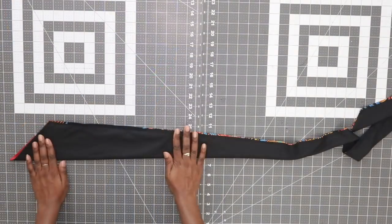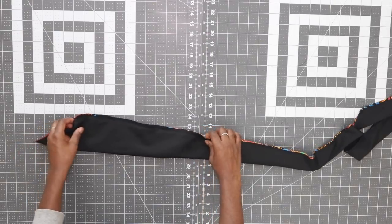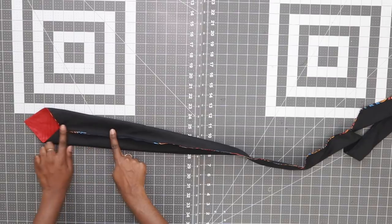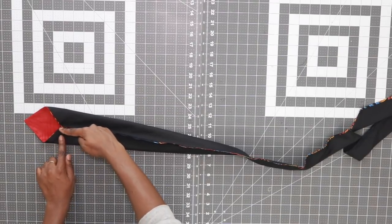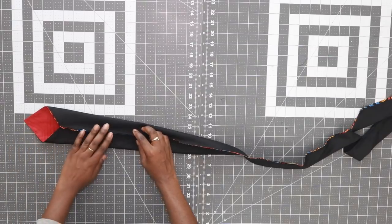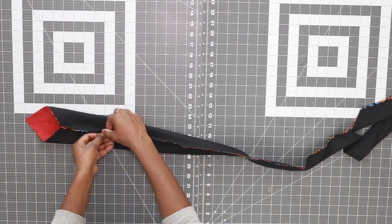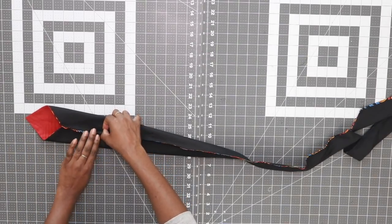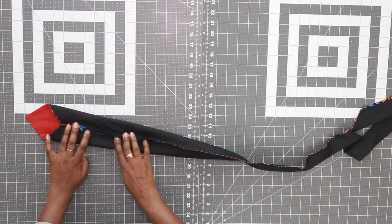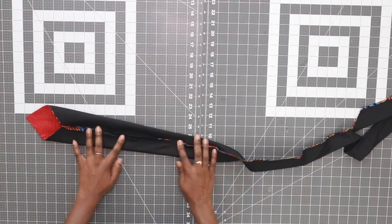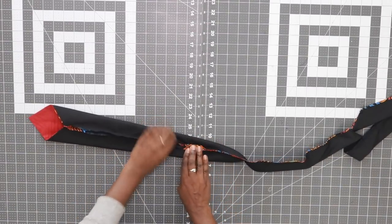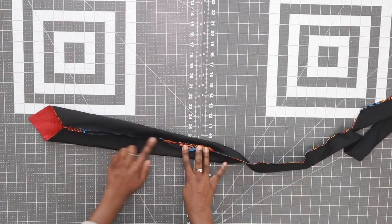Next what you want to go ahead and do is open up the tie and you want to center the seam. So the seam should be running parallel, should be in line with this point. And then you want to press the seam open and you want to keep the seam centered.